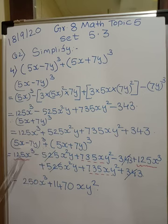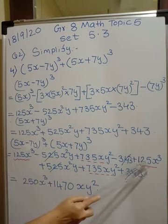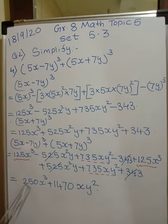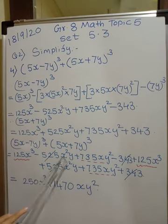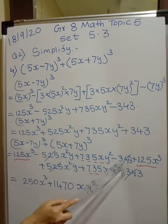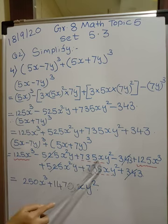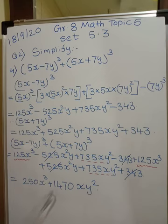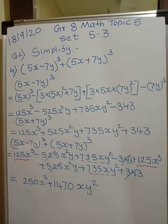Adding like terms: 125x³ + 125x³ = 250x³; -525x²y + 525x²y cancels; 343 - 343 cancels; 735xy² + 735xy² = 1470xy². So the final answer is 250x³ + 1470xy². Please take down all the steps and write neatly. That's all for today — thank you, students.